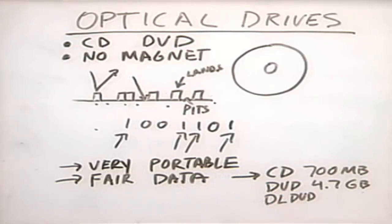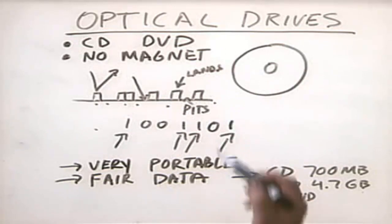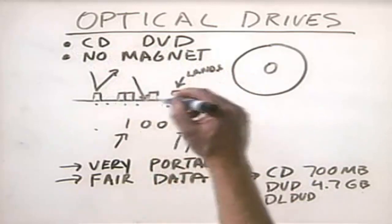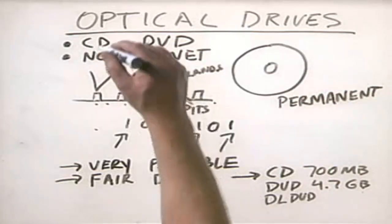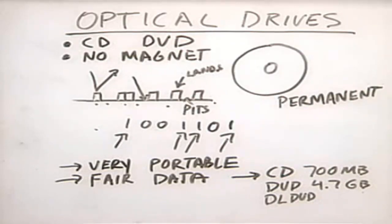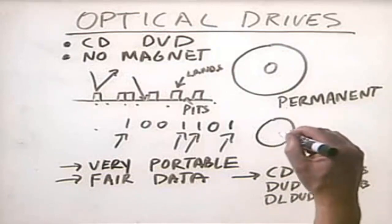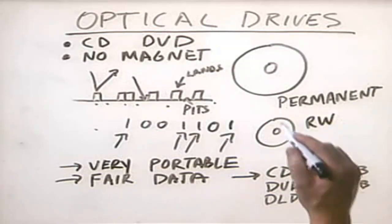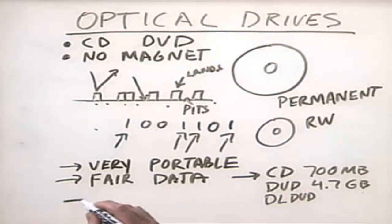We're still not anywhere near the amount of data stored by a hard disk drive, but we're holding a lot of data. One issue with an optical drive is that the data is either permanent or semi-permanent. A CD or DVD purchased from a store with physical etchings has permanent, read-only data — we called them CD-ROMs. There's no way to write information to it, so the data is protected. Unlike a hard disk drive where someone could accidentally delete something important, you can't do that on a CD.